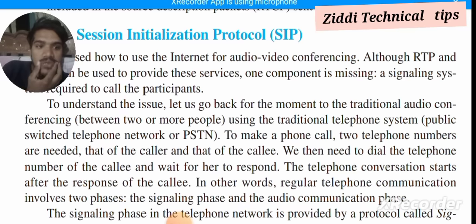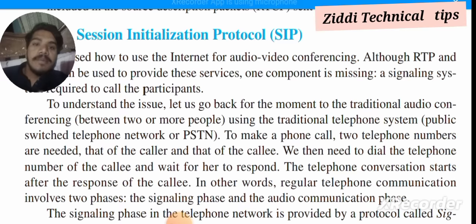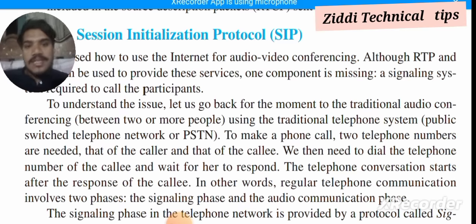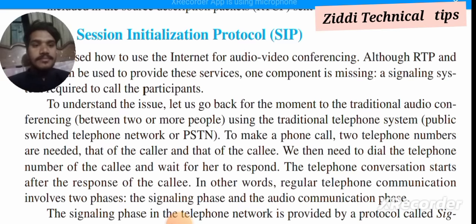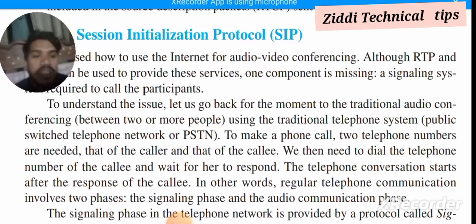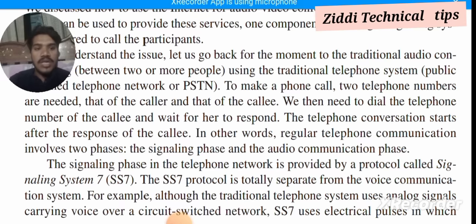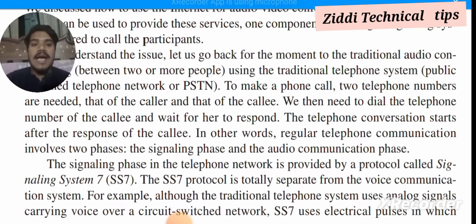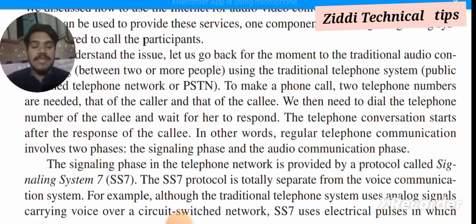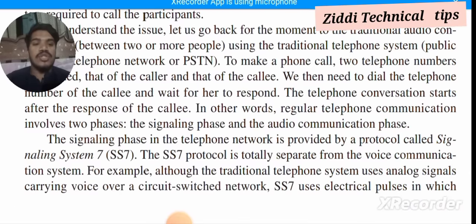The telephone conversation starts upon the response of the callee. In other words, regular telephone communication involves two phases: the signaling phase and the audio communication phase. The signaling phase in the telephone network is provided by a protocol called Signaling System 7, or SS7. The SS7 protocol is totally separate from the voice communication system.